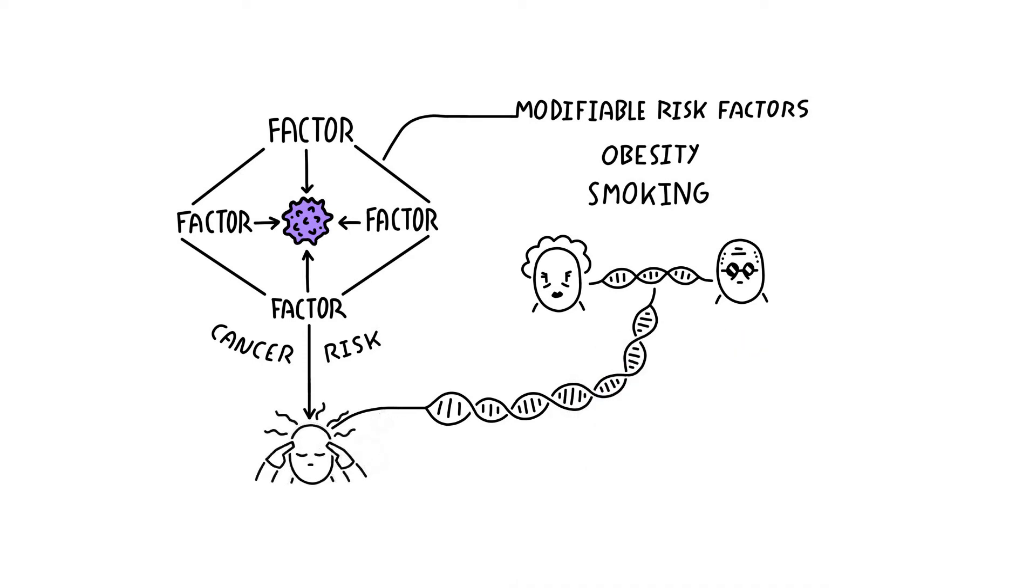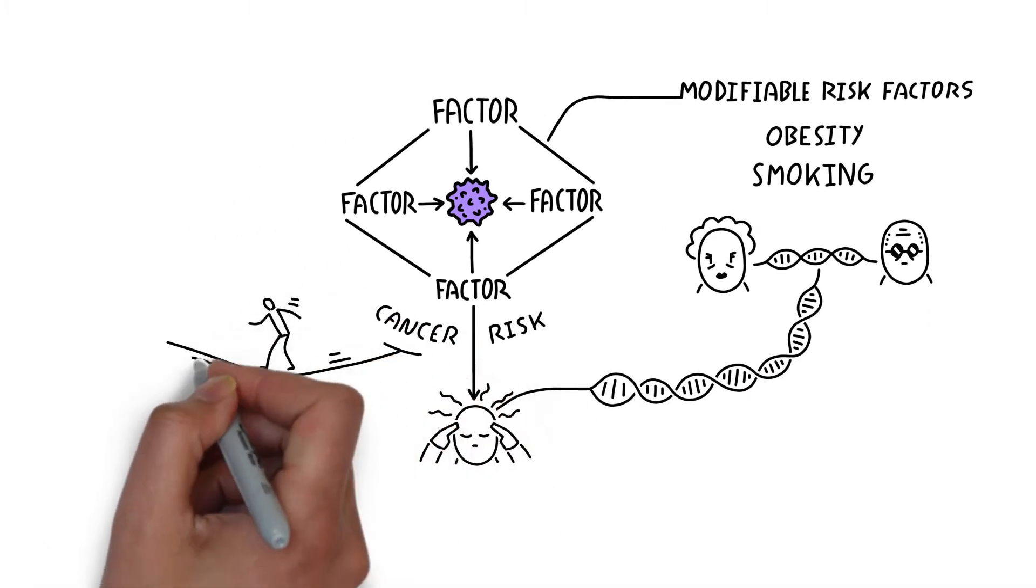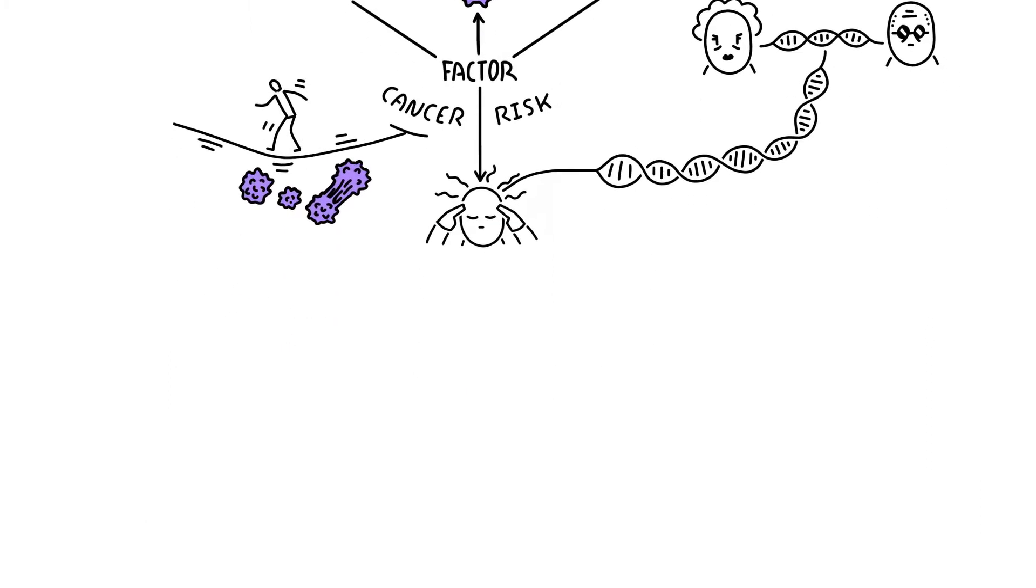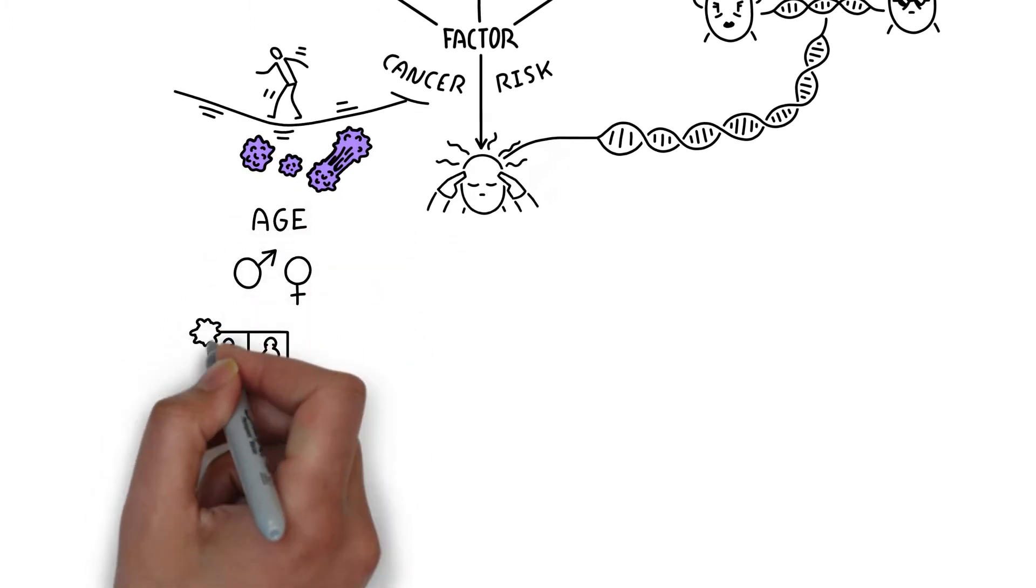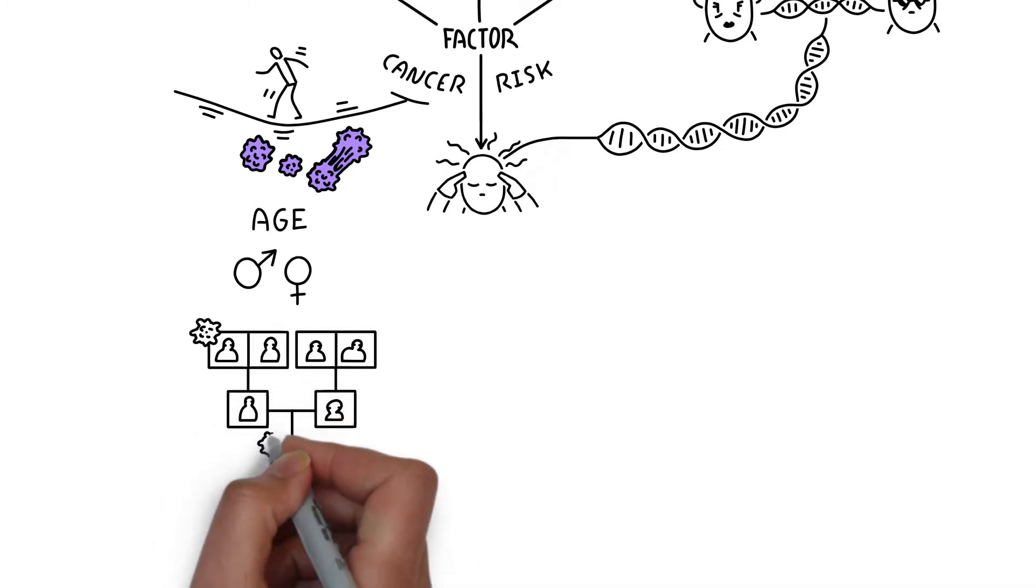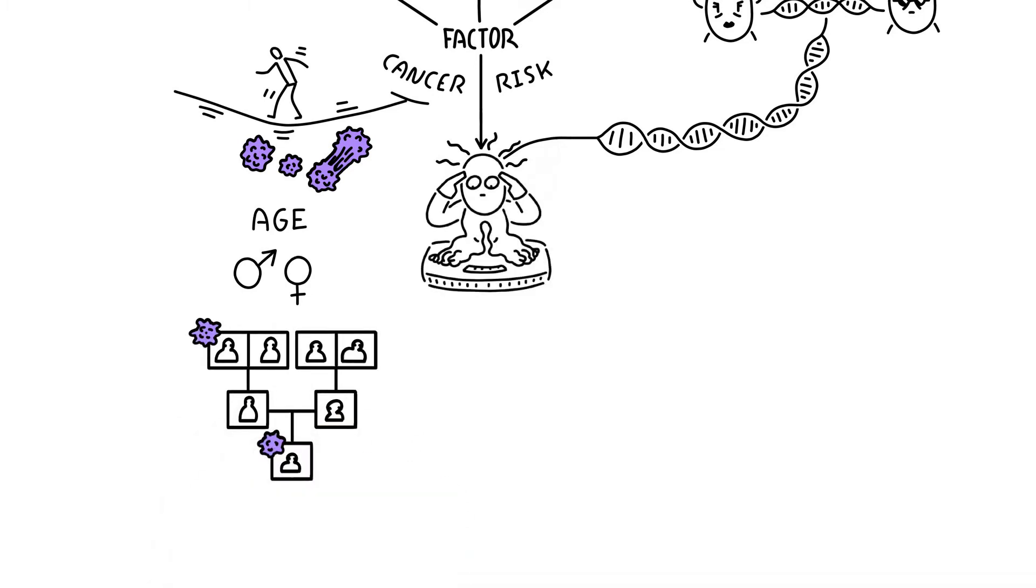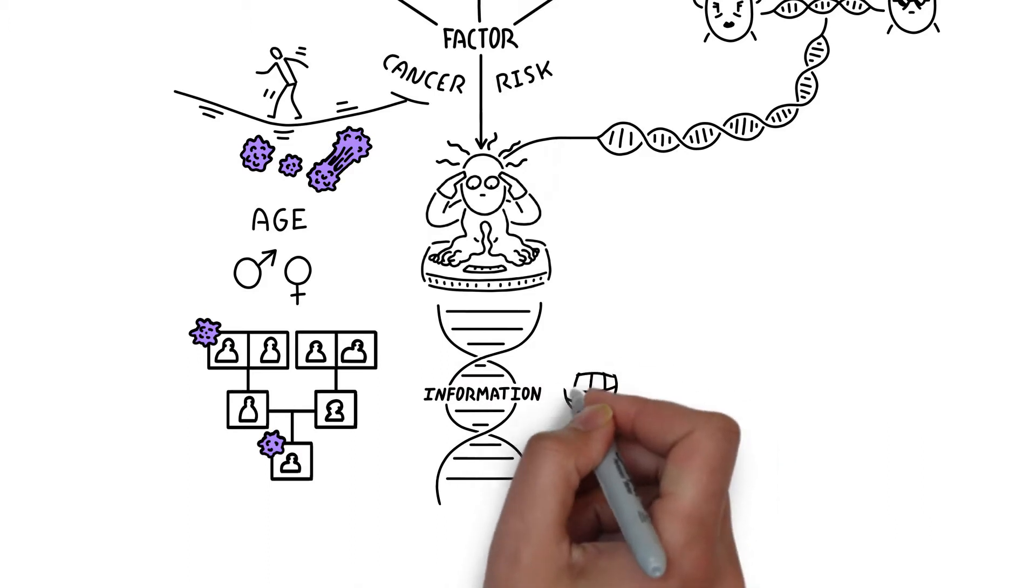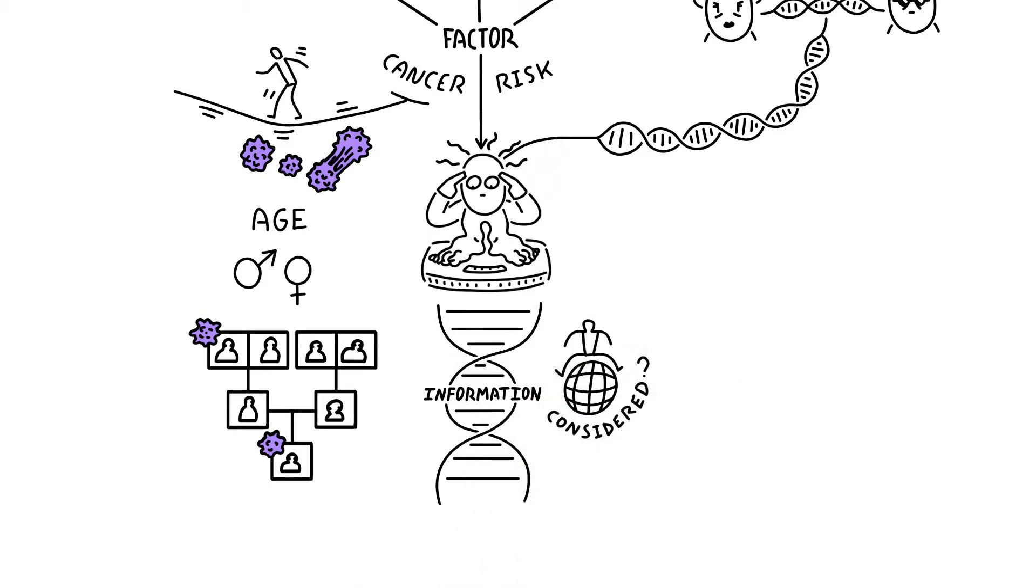To predict someone's risk of developing cancer, clinicians primarily rely on characteristics such as age, gender, family history, and recent change in weight. Genetic information is not typically considered for most individuals in the general population.